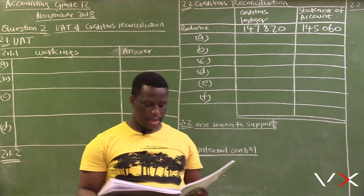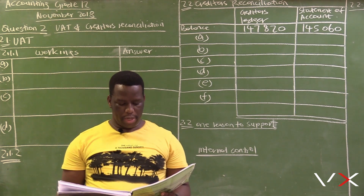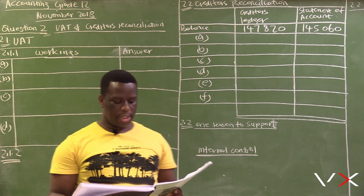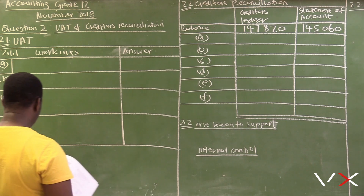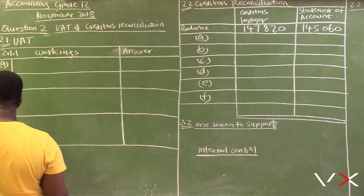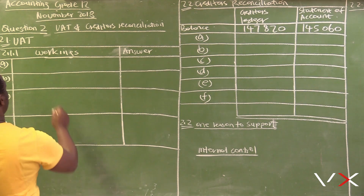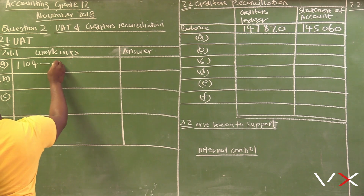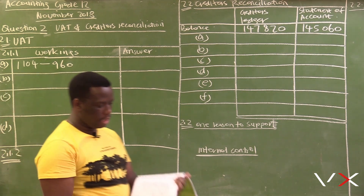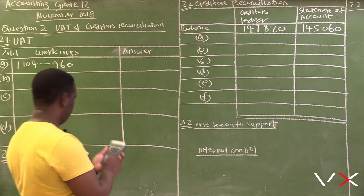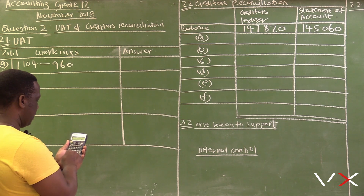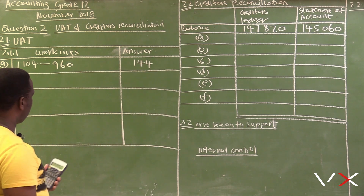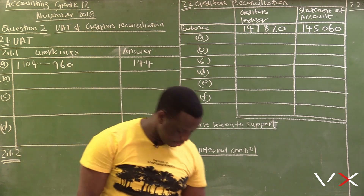The first calculation is A — we are required to calculate the VAT amount. Looking at the table, the amount excluding VAT is 960 and the amount including VAT is 1,104. Since we have both amounts, we simply subtract: 1,104 minus 960 equals 144. So the VAT amount A is 144.